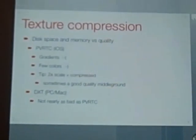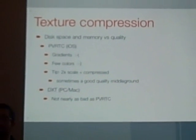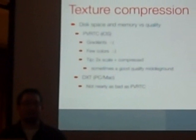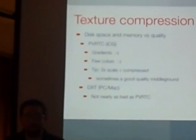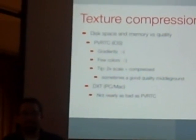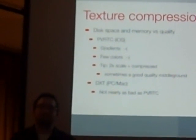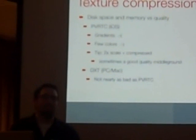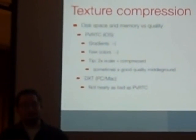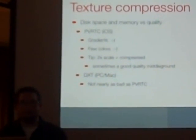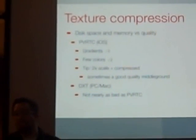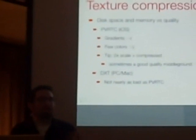Another thing for blurry textures: texture compression. On iOS you have a compression scheme called PVRTC — the hardware uses this as its only image compression scheme. In PVRTC compression, gradients look horrible. But if you have a texture that uses few colors and a limited palette, you're probably not going to see the effect of the compression. Here's a tip: instead of trading off to fully uncompressed, take the texture size and double it, then compress it. Sometimes that'll minimize the blockiness from compression, giving you a middle ground in quality.